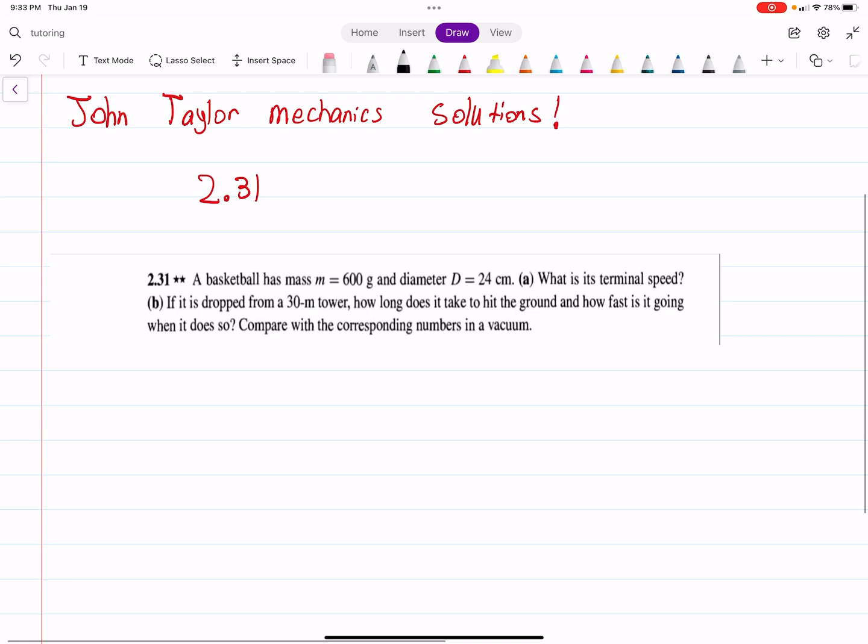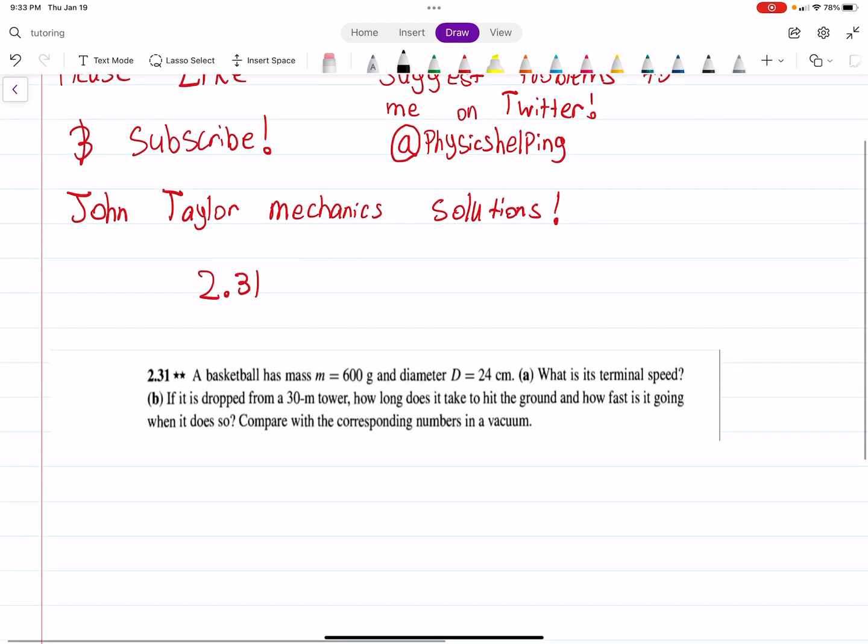Okay, but now let's get into the problem. So what do we have? We have a baseball of mass M, which is given as 600 grams, and we're given the diameter as 24 centimeters. Part A says find the terminal speed, so V-terminal for a vertical drop, which is what we have. For quadratic drag, so in this case, that's what we're working with.